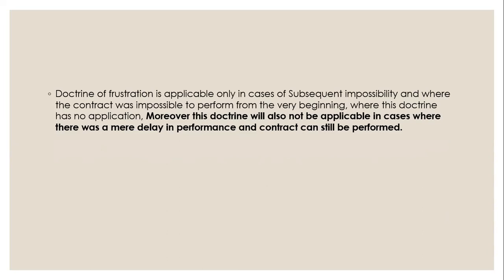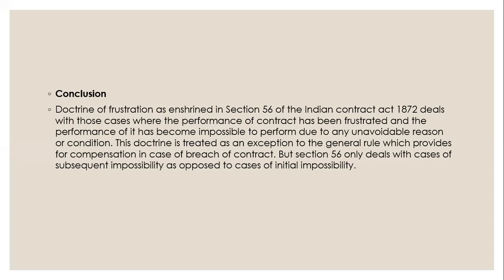The Doctrine of Frustration is applicable only in cases of subsequent impossibility. Where the contract was impossible to perform from the very beginning, this doctrine has no application. Moreover, this doctrine will also not be applicable where there was a mere delay in performance and the contract can still be performed. In conclusion, the Doctrine of Frustration as enshrined in Section 56 of the Indian Contract Act deals with cases where performance has been frustrated due to any unavoidable reason. It is treated as an exception to the general rule of compensation for breach of contract, and Section 56 deals only with subsequent impossibility.